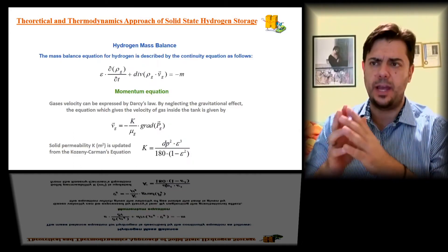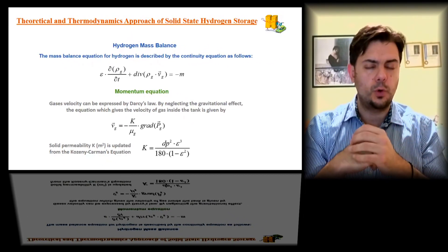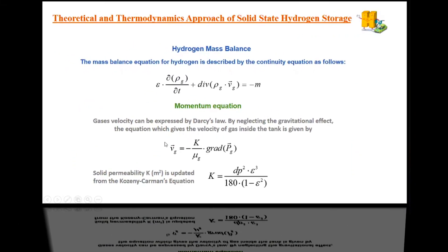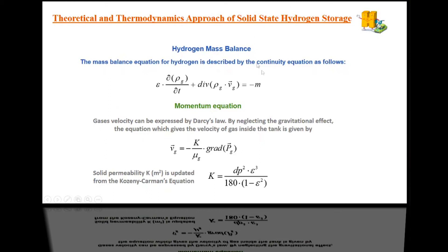The equation also contains the effective heat capacity of the hydride, which is a contribution from both the solid and gas phases, and the effective thermal conductivity, also a contribution from both phases. The porosity (void fraction) determines the contribution of each phase. The hydrogen mass balance equation gives density over time equal to the mass rate, and the momentum equation uses Darcy's law.